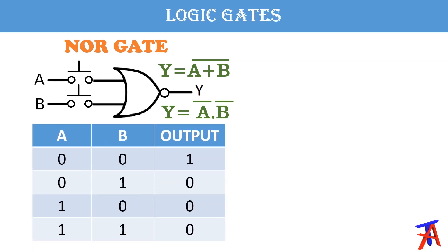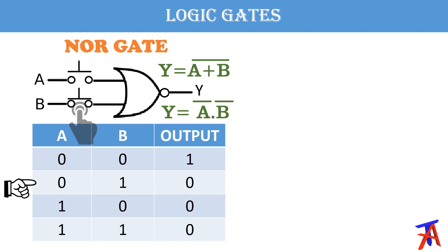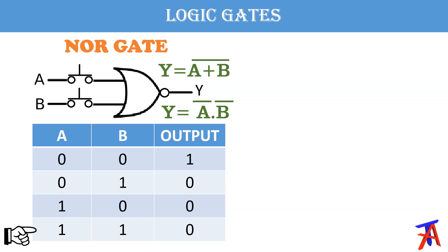Here is the truth table of the NOR gate. If both inputs are 0, output will be 1. If a is 0 and b equals 1, output will be 0. If a is 1 and b is 0, output will be 0. And if both inputs are 1, output will be off. As you can see, it is just the complement of the OR gate — complement the OR gate truth table by replacing 1s with 0s and 0s with 1s, and you get the NOR gate truth table.